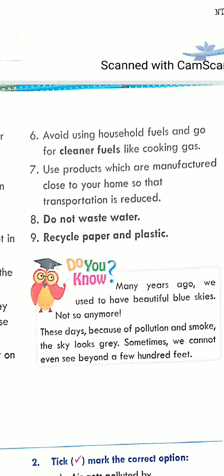The next one is: use products which are manufactured close to your home, so that transportation is reduced. Nowadays online purchasing is very much in fashion, but online purchasing involves a lot of transportation, which means more vehicles and more pollution. If we use products available or manufactured in nearby areas, there are two benefits: one, our local sellers' economy becomes stronger, and two, transportation is reduced so we can save our environment.